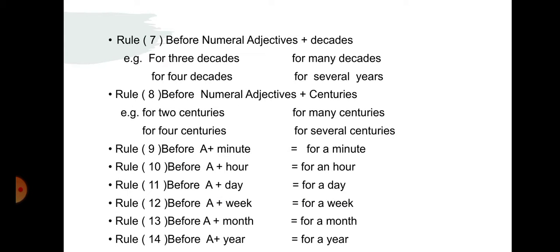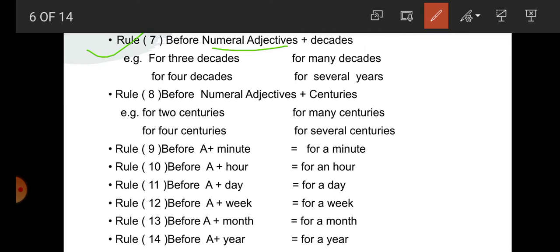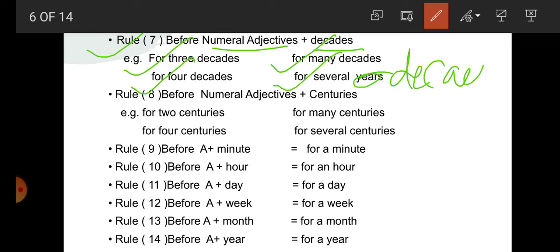Rule number 7: before numeral adjective plus decades. For example: for 3 decades — which 3 decades? Not definite. For many decades — which many decades? Not definite. For 4 decades — not definite. For several decades — not definite. Rule number 8: before numeral adjective plus centuries. For example: for 2 centuries, for many centuries, for 4 centuries, for several centuries. Centuries is not definite, that's why for is used.